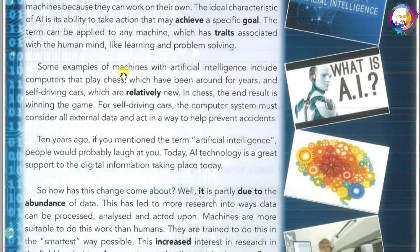Some examples of machines with artificial intelligence include computers that play chess, which have been around for years, and self-driving cars, which are relatively new. In chess, the end result is winning the game. For self-driving cars, the computer system must consider all external data and act in a way to help prevent accidents.